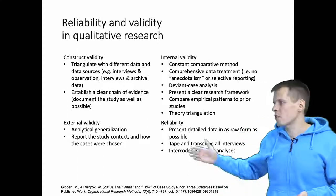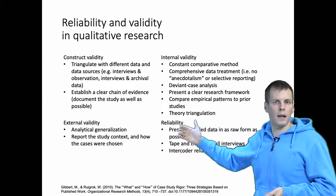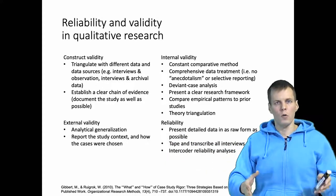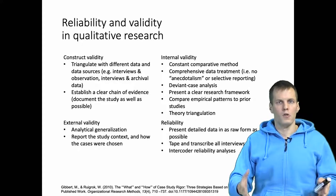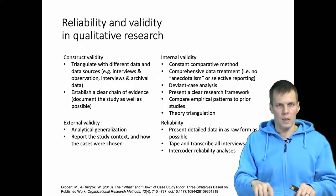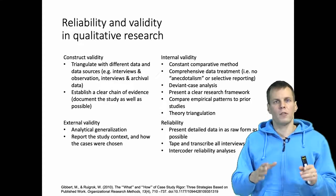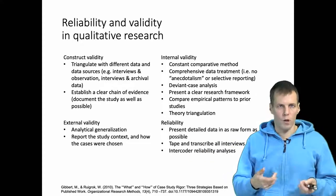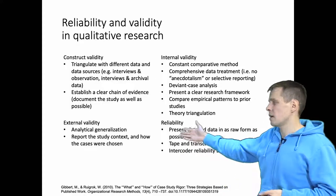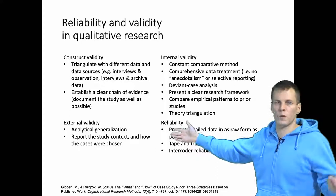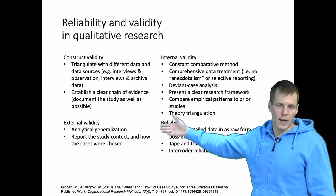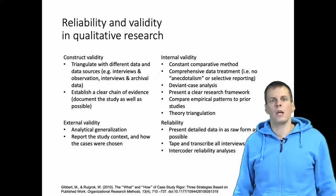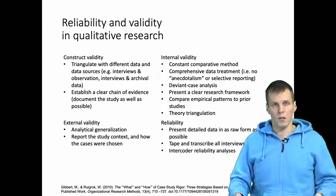Finally, we have external validity, which is the same as generalizability, and here things work basically the same way as in quantitative research. External validity is about whether the population you're studying also represents other populations — whether the findings from your focal population extend to other populations as well. In qualitative data analysis, we don't really have specific tools for that; we apply what's called analytical generalization, where you reason, for example, that something studied in Finland relating to culture may generalize to other cultures similar to Finland.